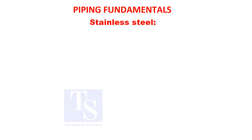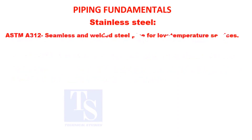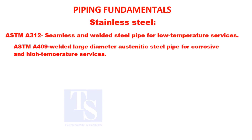Stainless steel ASTM A-312: seamless and welded steel pipe for low temperature services. ASTM A-409: welded, large diameter, austenitic steel pipe for corrosive and high temperature services.